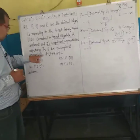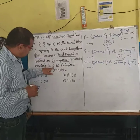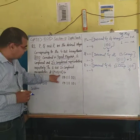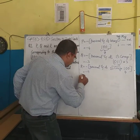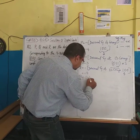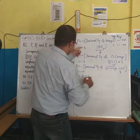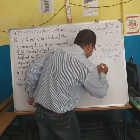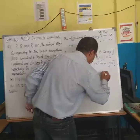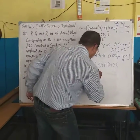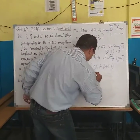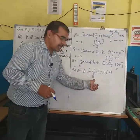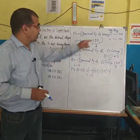Now the question asks for the 6-bit 2's complement representation of P plus Q plus R. So we compute: minus 4 plus minus 3 plus minus 4, which gives us minus 11 in decimal.